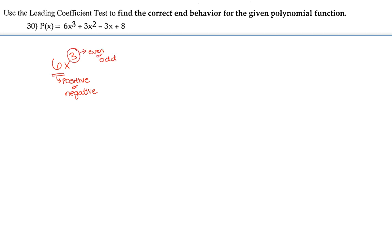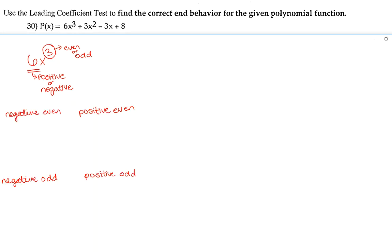There are four possible outcomes for the leading coefficient test. When the coefficient is negative and the degree is even, you'll have end behaviors facing down. When the coefficient is positive and the degree is even, you'll have end behaviors facing up.